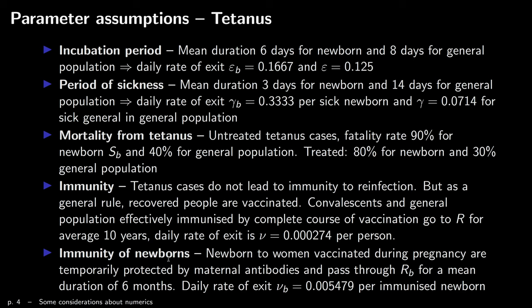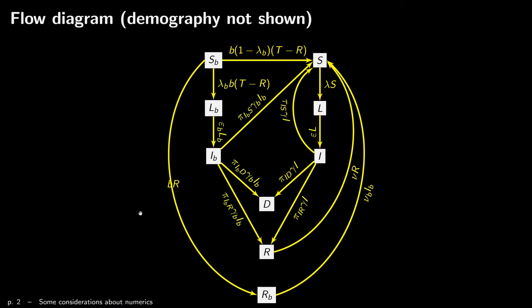There's also immunity of newborns — something we haven't seen in models so far. If the mother is vaccinated during the pregnancy, then the antibodies are transferred onto the newborn, and so there is a period of immunity inherited from the mother. That period is typically assumed to be quite short — here he takes it at six months. This flow is a direct consequence of how many people recovered, where B is the birth rate.